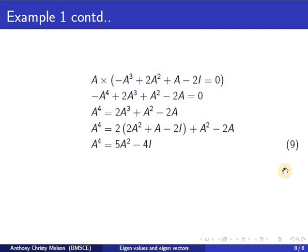So the equation reduces to A power 4 is equal to 5A squared minus 4I. So I can evaluate A power 4 in terms of A squared and I. So A power 4 is given by equation 10.